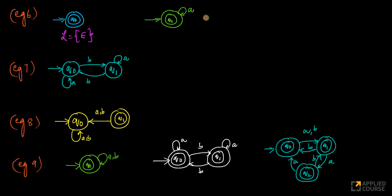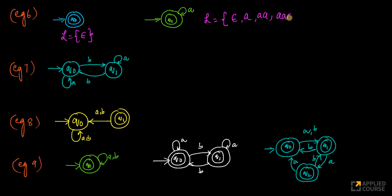What about the language accepted by this next machine? If you have epsilon, it will accept it because the initial state is also the final state. If you have 'a', it accepts. 'a, a' accepts. 'a, a, a, a, a' — all of them are accepted. But 'a, b' — it doesn't know what to do since there's no transition for b.